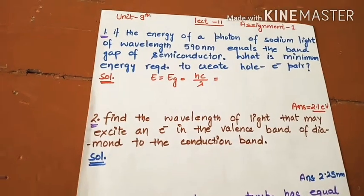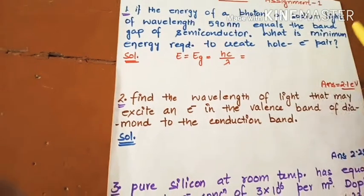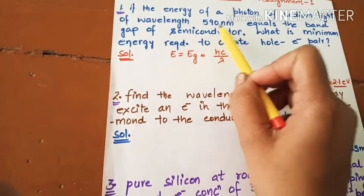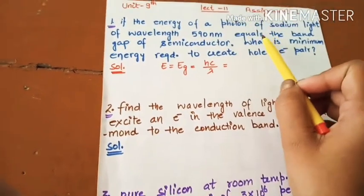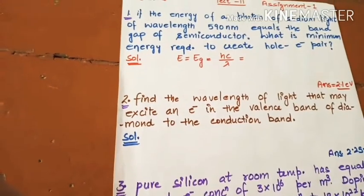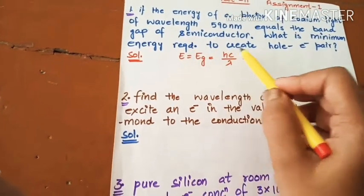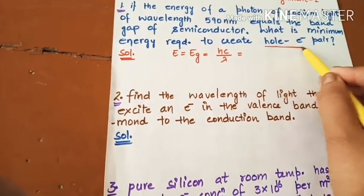Here is one numerical: If the energy of a photon of sodium light of wavelength 590 nanometer equals the band gap of semiconductor, what is the minimum energy required to create a hole-electron pair?